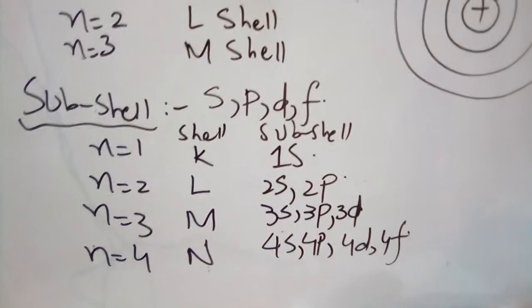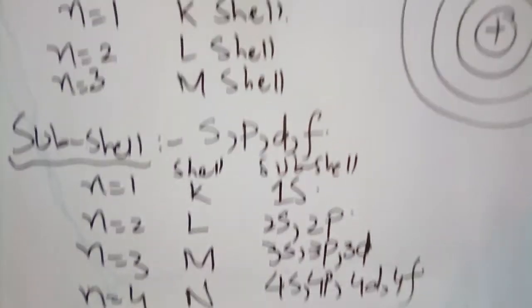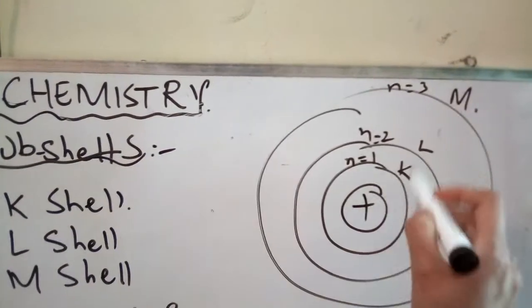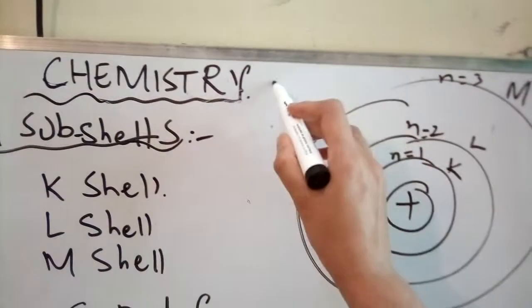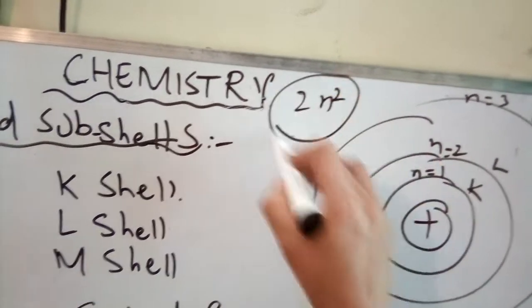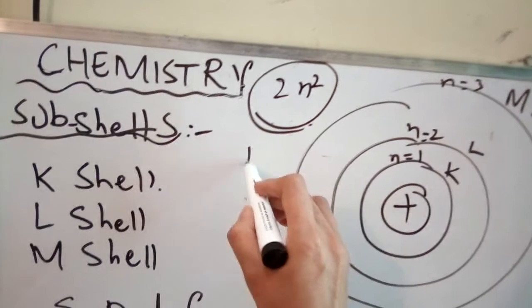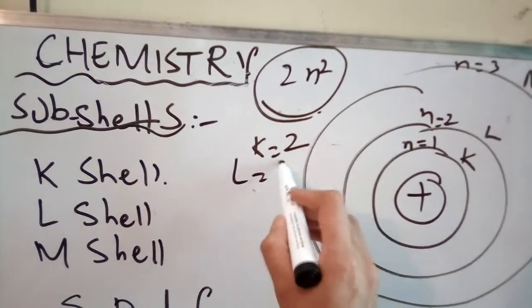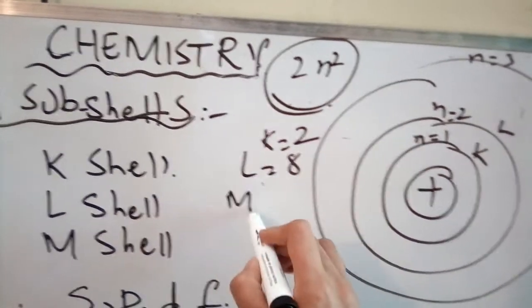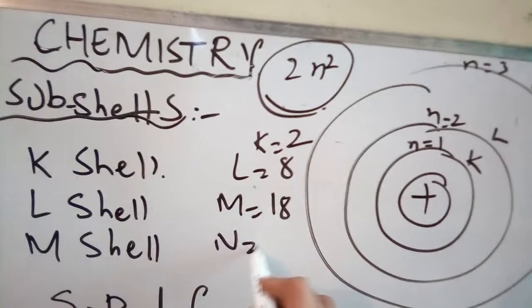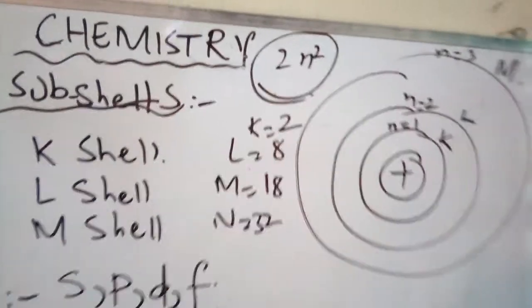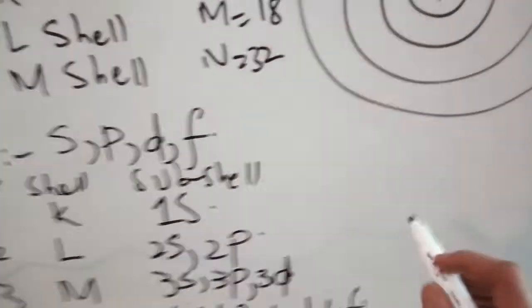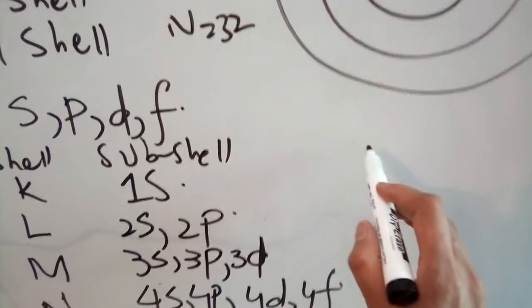Now, these sub-shells accommodate different numbers of electrons. As I told you, to calculate the number of electrons in shells, we use the formula 2n². So the K-shell has 2 electrons, L has 8, M has 18, and N has 32 and so on.